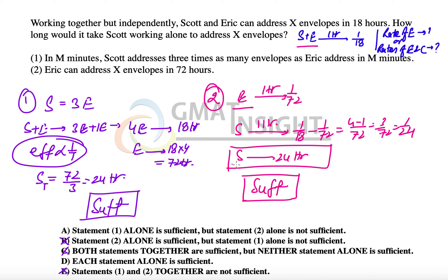You can always verify your calculation and understanding, because the first and second statements directly or indirectly give us the same information. Eric's rate was 72 hours as per both statements, and the same is true for Scott's rate. The answer is option D. Thank you so much.